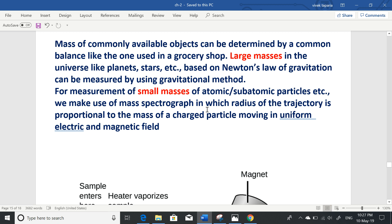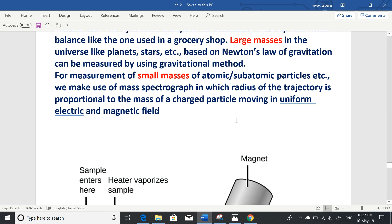Sir J.J. Thompson Mass spectrograph. E by m. Electron. In which radius of the trajectory is proportional to the mass of a charged particle moving in uniform electric and magnetic field. Electric field - parabolic trajectory follows the charge particle. And magnetic field - circular.